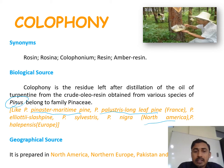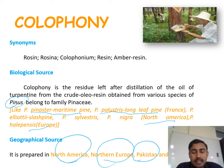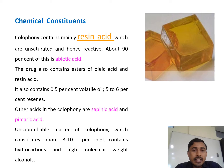Other species include Pinus nigra from North America and Pinus halepensis from Europe. These are the certain species used for the preparation of colophony. Regarding geographical sources, it is prepared in North America, Northern Europe, Pakistan, and India.